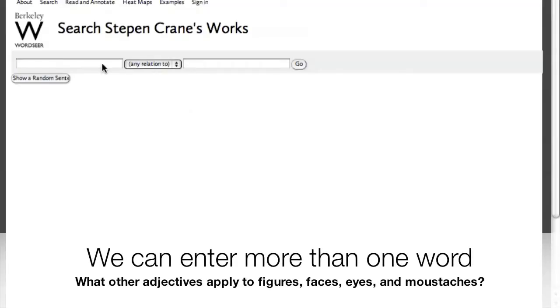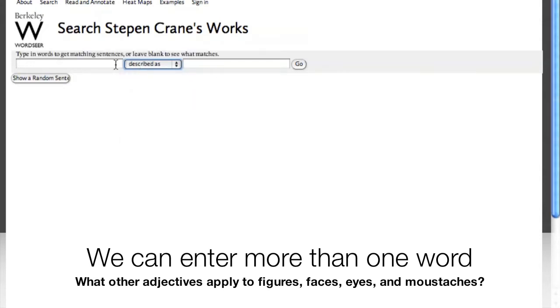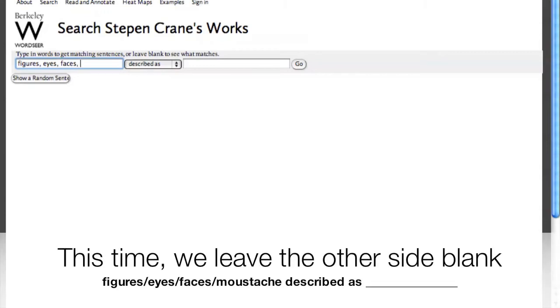Back on the search page, I can enter multiple words to match. For example, I'm curious about what other words are used to describe figures, faces, eyes, and mustaches. So, I enter them on the left, and now leave the right-hand side box blank.